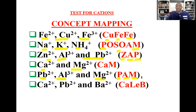Finally, we have lead and barium. These cations form a white precipitate with a soluble sulfate — for instance, sulfuric acid or sodium sulfate. Those are the cations that can be tested in the exam.